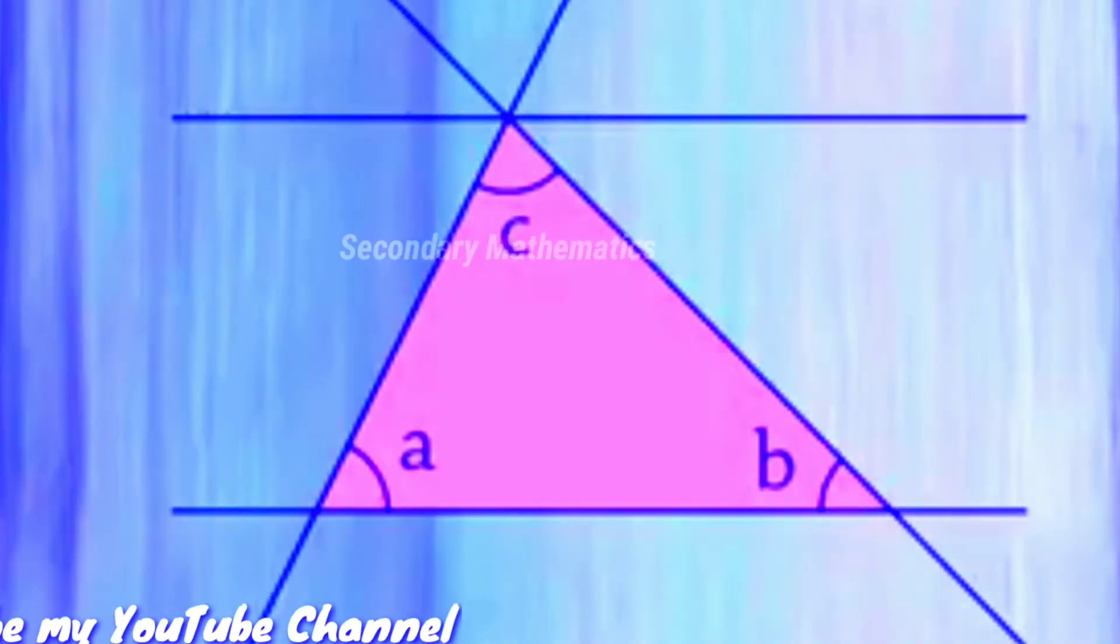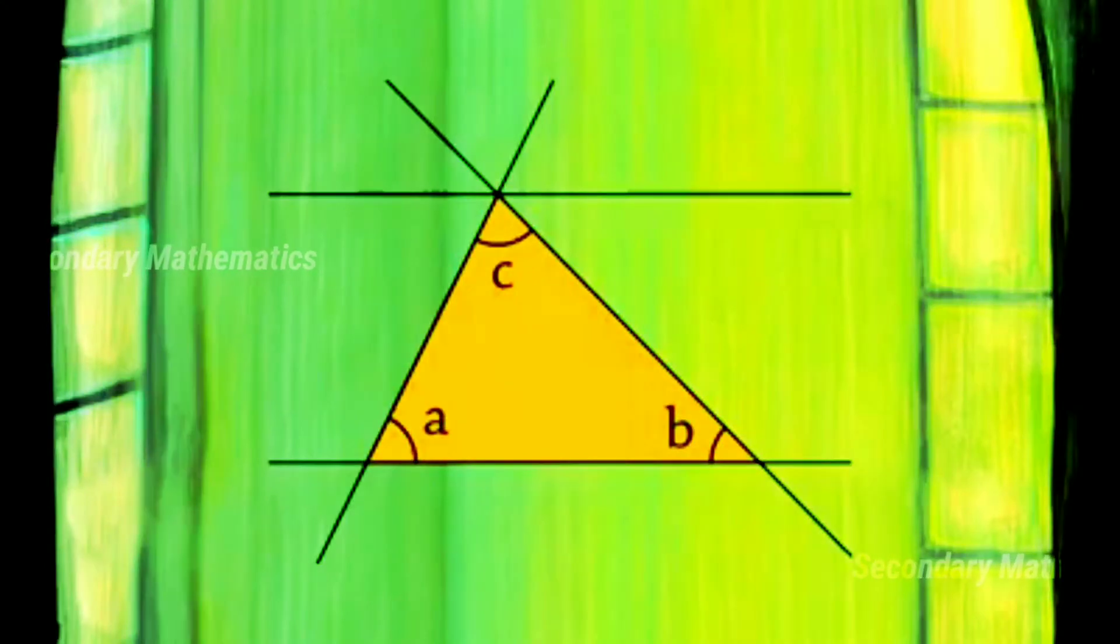Recall: if two lines are parallel and a line transverses them, then the alternate interior angles are equal to one another. Using this fact, we see that this angle is equal to A.